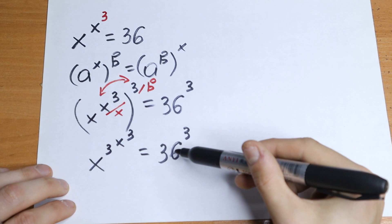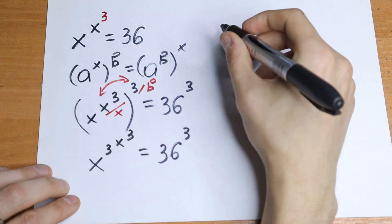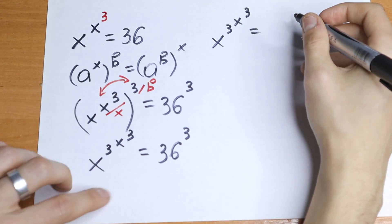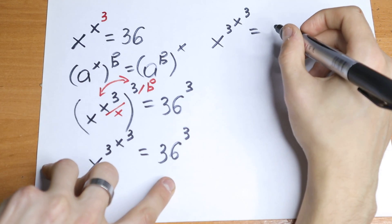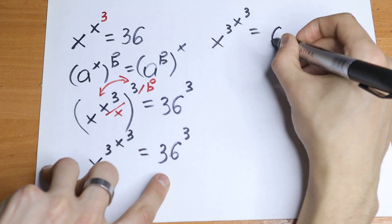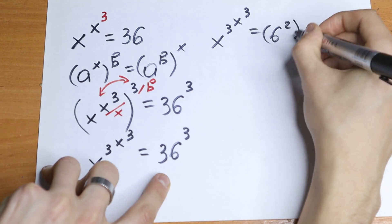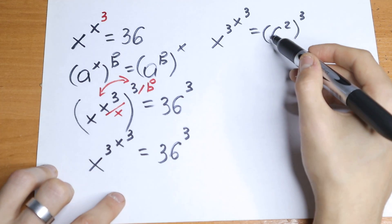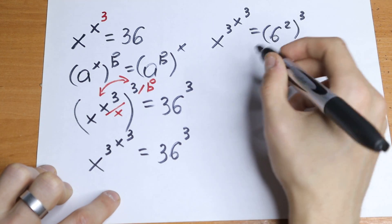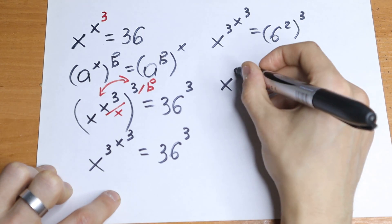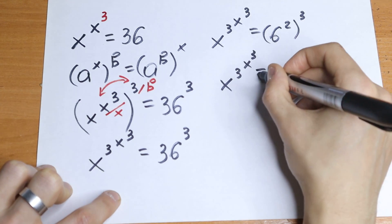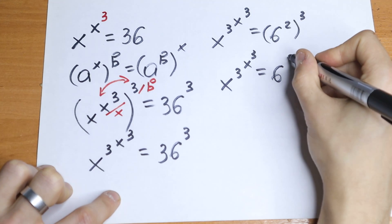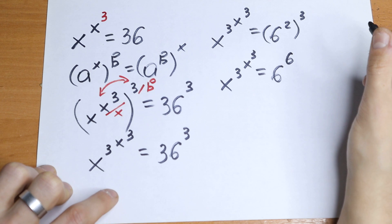For sure we can simplify this a little bit. We will have x to the third power raised to the x to the third power equal to 36, which can be written as 6 squared. So we will have 6 squared raised to the third power. We can raise 6 squared to the third power, giving us x cubed to the power x cubed equal to 6 to the power 6, multiplying the exponents.